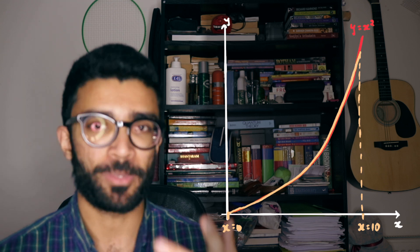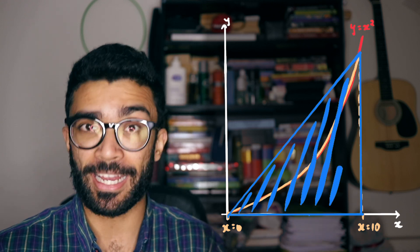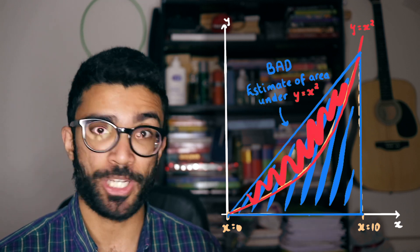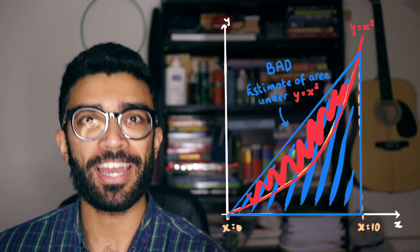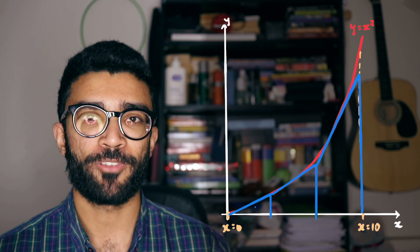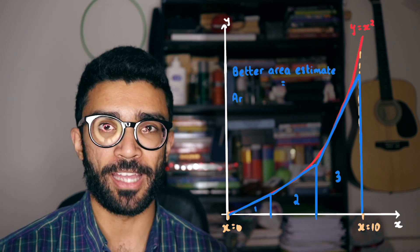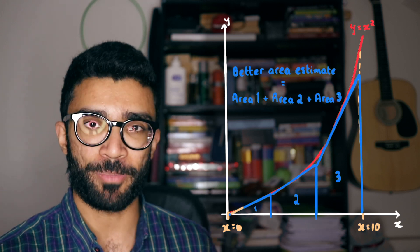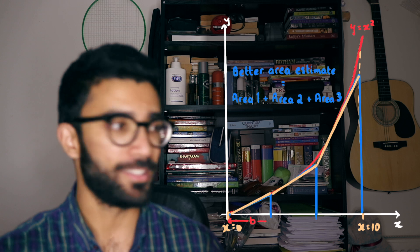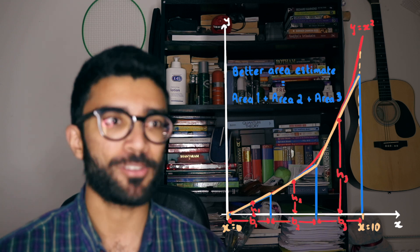We could calculate the area of a triangle as an estimate, but it's a pretty poor overestimate because we're including an area that doesn't actually belong under the curve. A way to improve our estimate is to divide up the area under the curve into trapezia. Then we can find the area of each trapezium and add them all up to find an estimate for the area underneath the curve. This is still an estimate because we have straight lines at the top of each trapezium rather than the actual curve, but it's a better estimate than before.